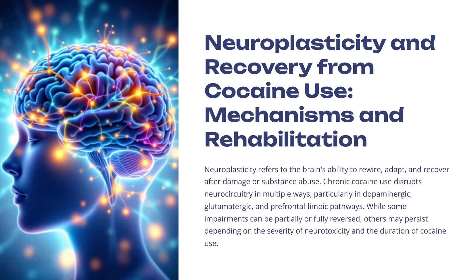We know that chronic cocaine use disrupts neurocircuitry in multiple ways — especially in the dopaminergic, glutaminergic, and the prefrontal cortical pathways. Some impairments can be partially or fully reversed. Others may persist depending on the severity of the neurotoxicity and the duration of cocaine use.